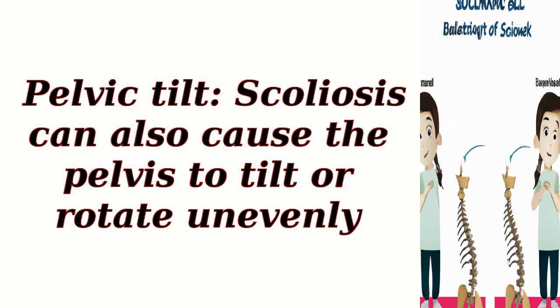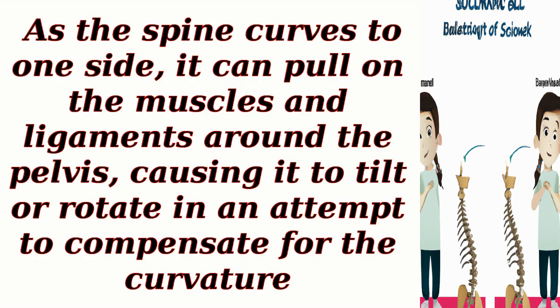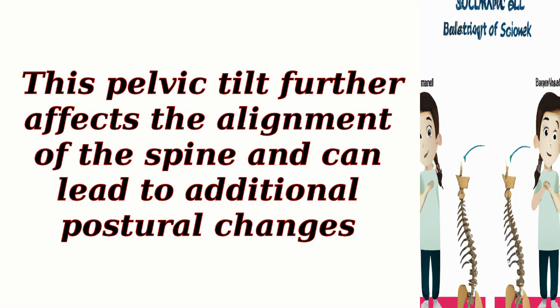Pelvic tilt: scoliosis can also cause the pelvis to tilt or rotate unevenly. As the spine curves to one side, it can pull on the muscles and ligaments around the pelvis, causing it to tilt or rotate in an attempt to compensate for the curvature. This pelvic tilt further affects the alignment of the spine and can lead to additional postural changes.